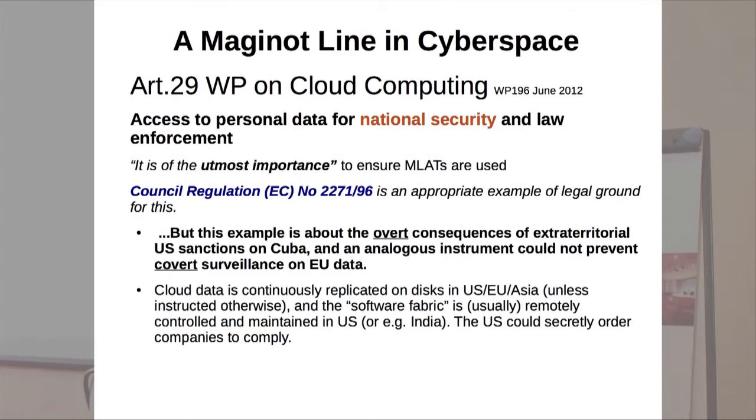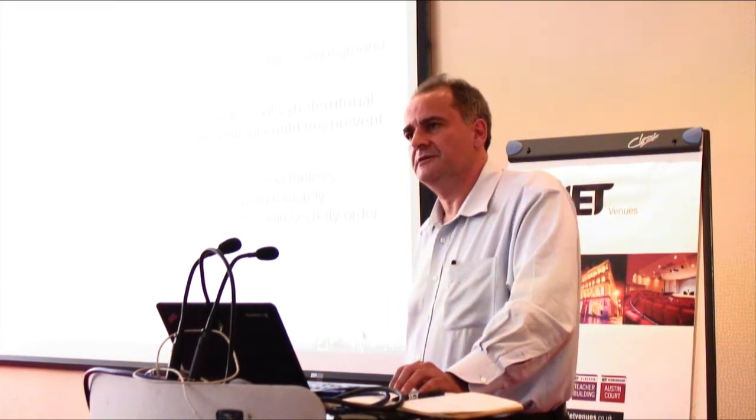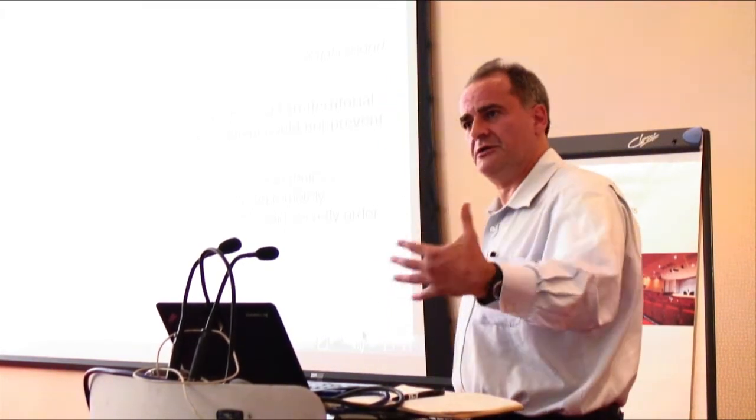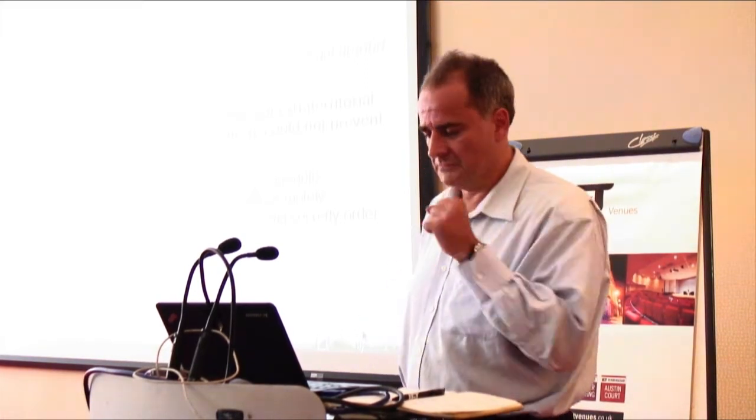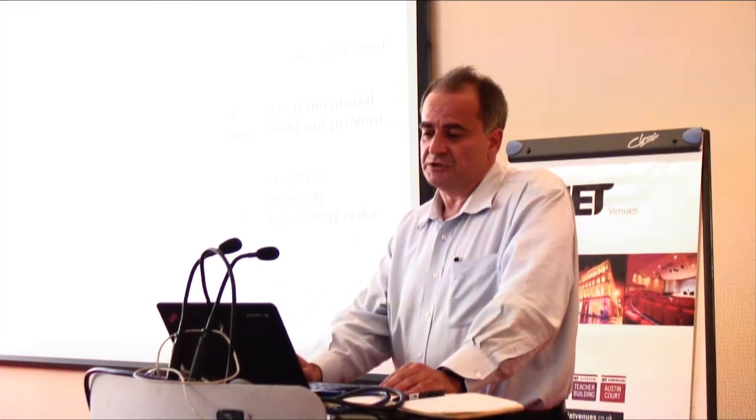But then Article 29 said, well, how can we actually ensure that this is really done? And they referenced this rather bureaucratic regulation that actually goes back to the Helms-Burton Act imposing extraterritorial sanctions on Cuba. And what that was all about was when a European company that might want to do business with Cuba, if that company also did business in the United States, they could be sanctioned by the United States just for being within range of US jurisdiction. And the EU said, no, we're not having that. So this council regulation said, essentially, that they could disregard any attempt by the US government to impose sanctions. Well, that's all very well. But that's clearly not going to work for this case. Because the whole point about this secret extraterritorial surveillance is it's secret. You're never going to know it's happening. So this seems to be a completely futile kind of bureaucratic attempt to undo the damage that's already, by this stage, been done.